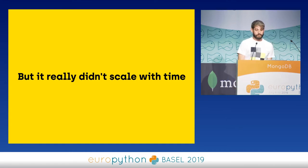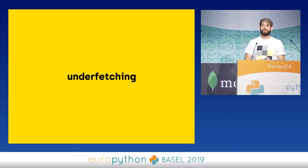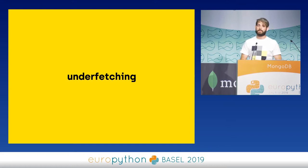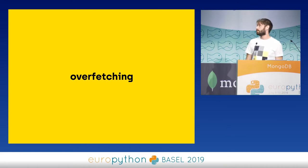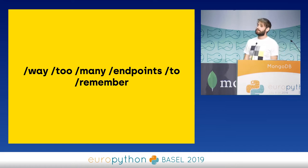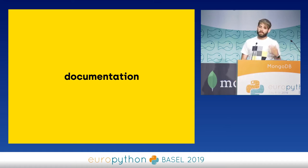REST became the industry standard, at least in the non-enterprise world. But it really didn't scale with time. While it still makes sense for some use cases, you have issues like underfetching — you do a request and then have to do more requests to get more data. For example, a blog post where you want information about the author but the author is a link, so you need another GET. The solution would be a new endpoint returning all the data, but then you have overfetching — sending way too much data the client doesn't need. And the other painful issue is way too many endpoints to remember, plus all the documentation work.